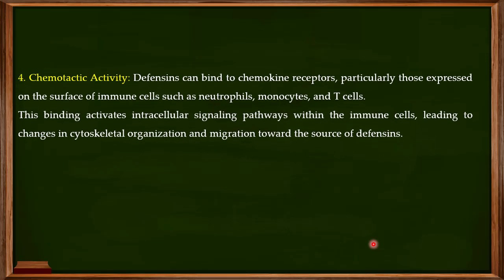Another important function of defensins is their chemotactic activity. Defensins bind to chemokine receptors, particularly those expressed on the surface of immune cells like neutrophils themselves, monocytes, and T cells. This binding activates intracellular signaling pathways within these immune cells, leading to changes in cytoskeletal organization and migration toward the source of defensins — thereby attracting other immune cells to the site of infection so the pathogen can be cleared.